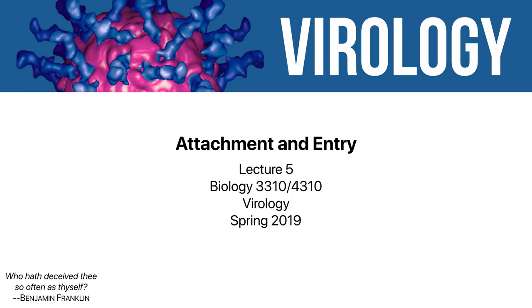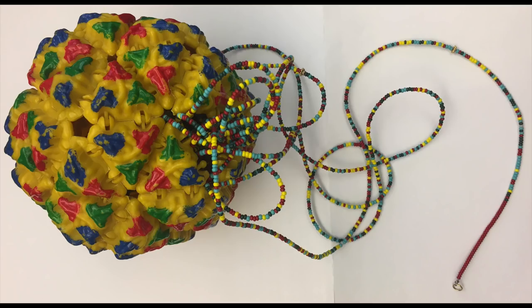I want to keep one thing in mind during this. I'm holding poliovirus again, which I brought in last time. Last time we focused on the capsid, but today we're going to focus on getting out what's inside it. This has a 7,442 base genome in it. It's been beaded in the right sequence by virologist Ann Palmenberg at the University of Wisconsin. She worked on rhinoviruses and had one of these in her office.